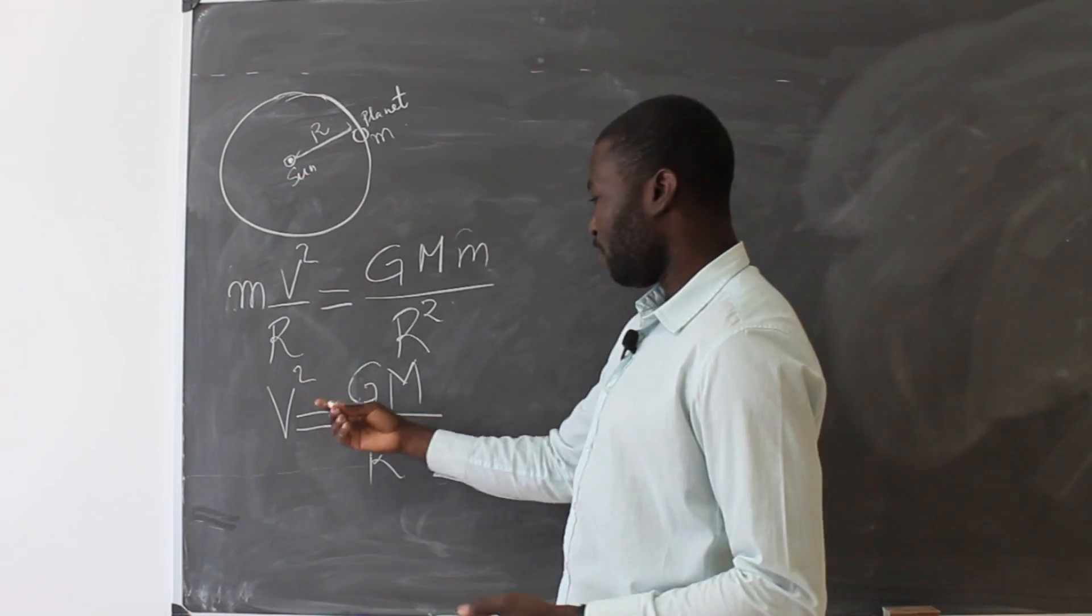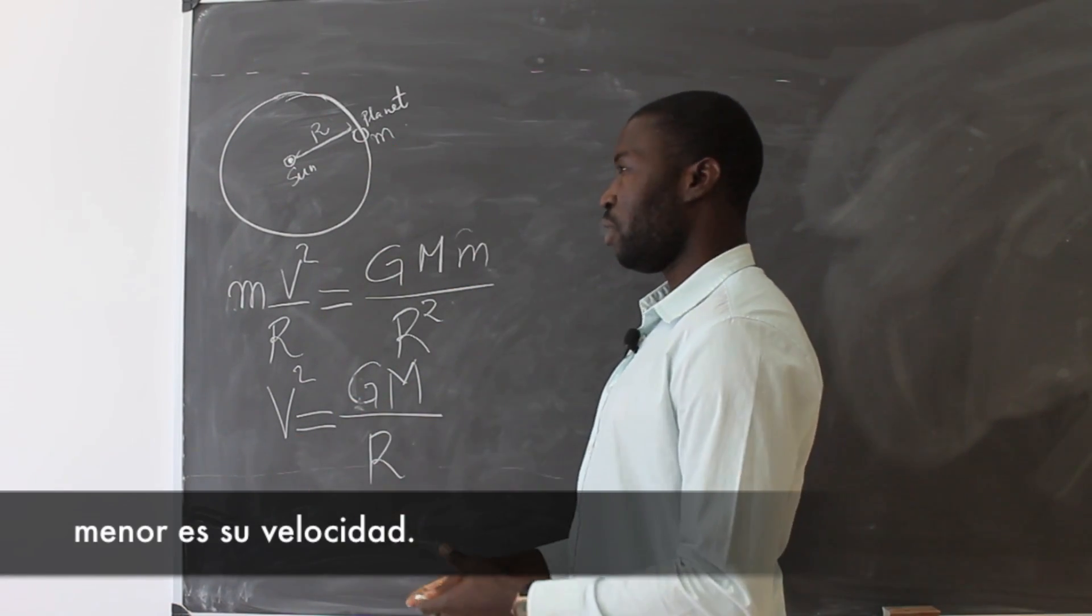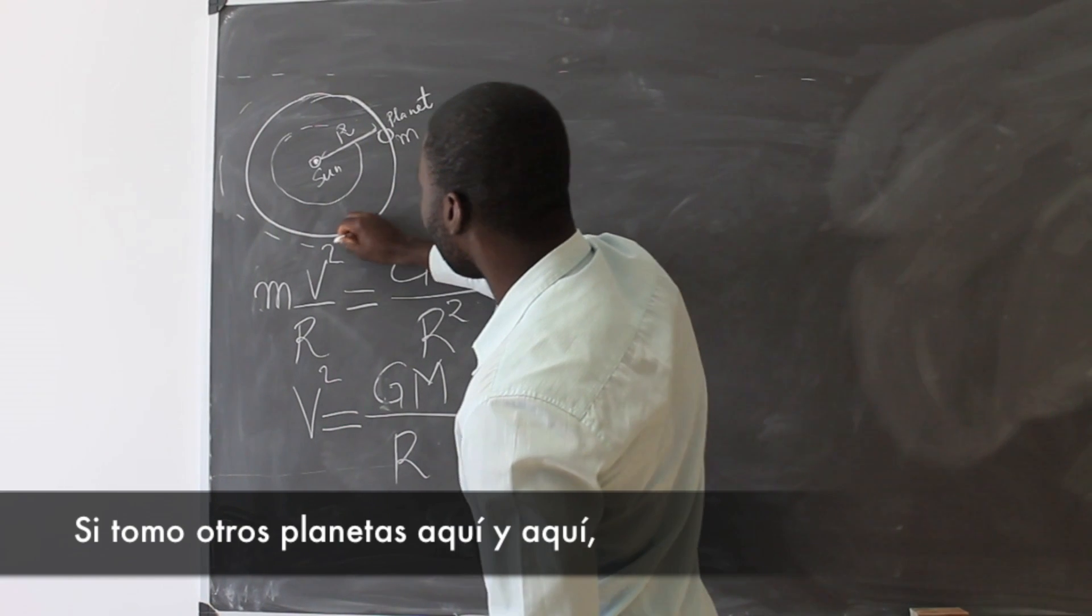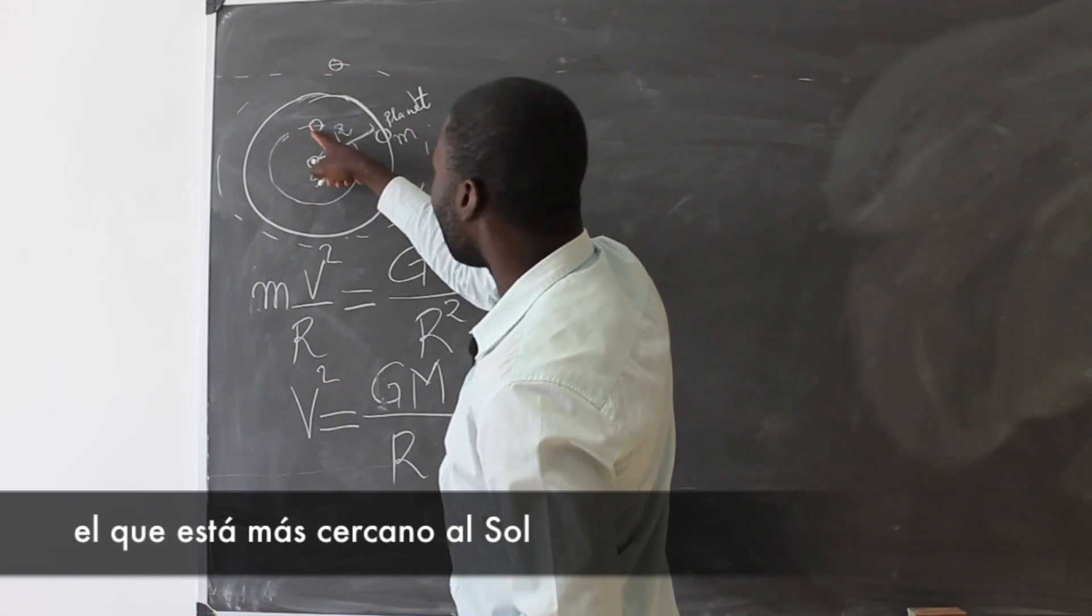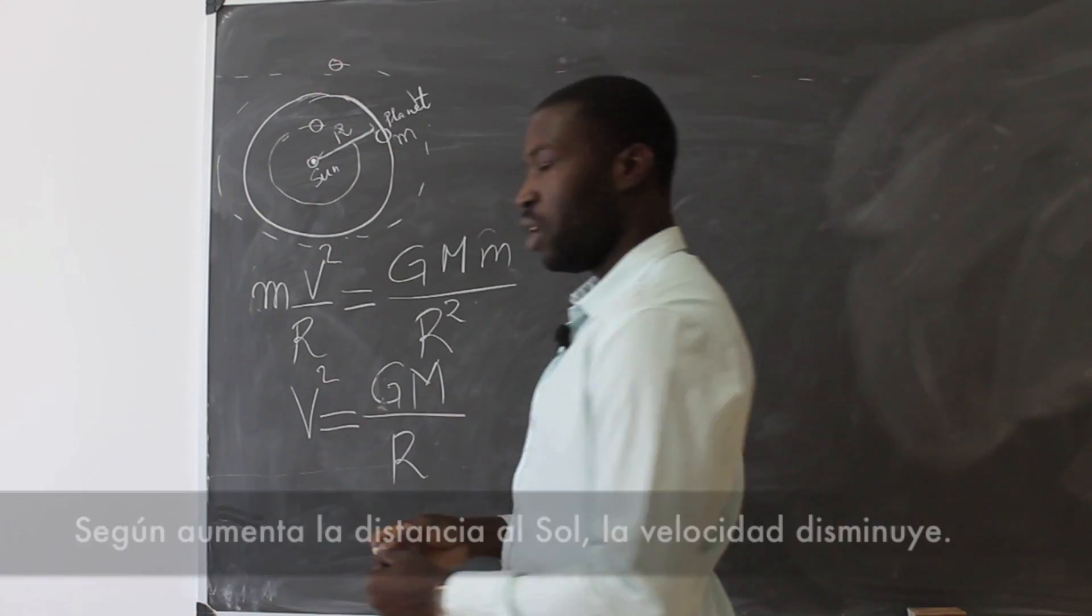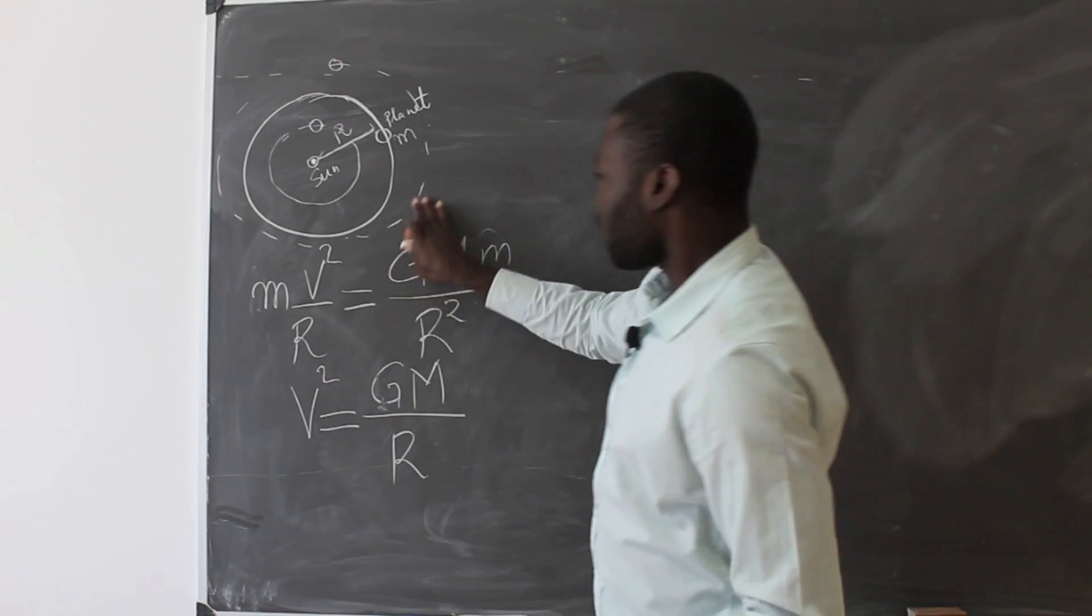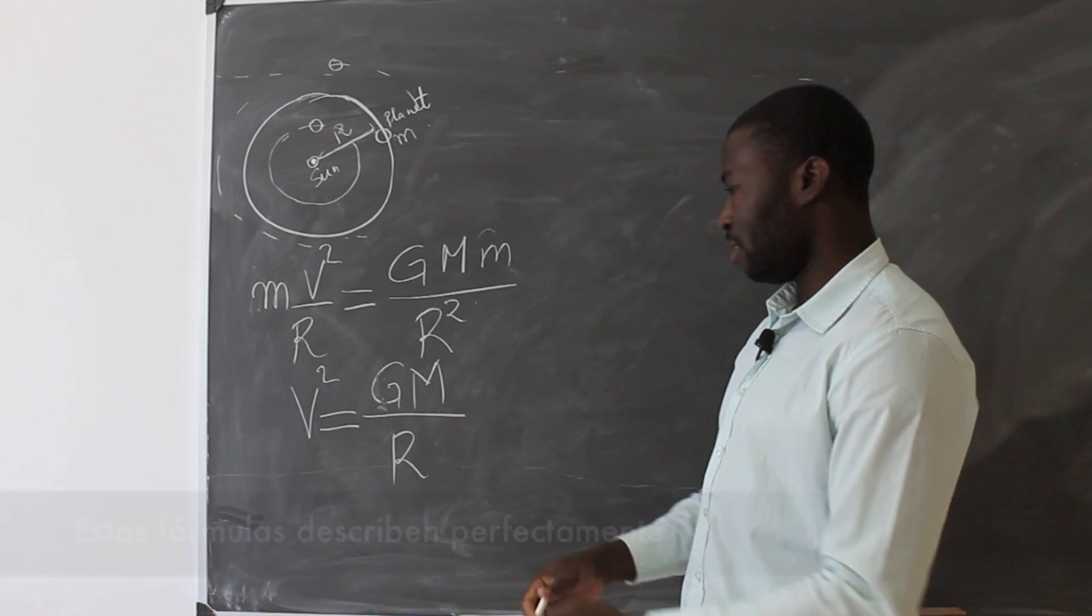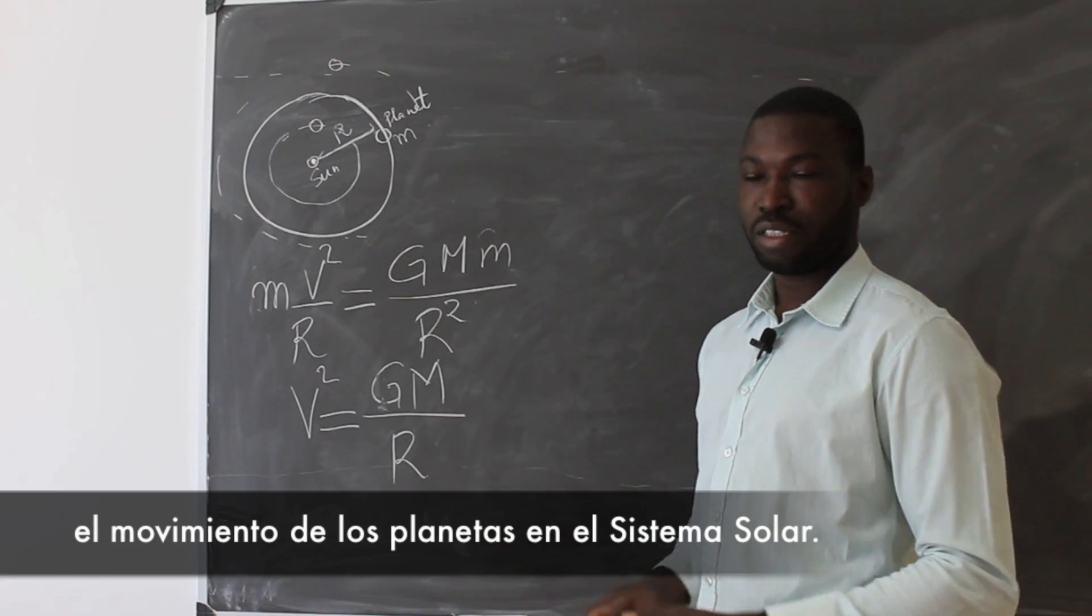This tells us that if the planet is far away from the Sun, its velocity should be smaller. It means that if I take another planet here, the one which is closer to the Sun will have larger orbital velocity compared to this one. So as the planet is far away from the Sun, its orbital velocity decreases. And this is precisely what has been observed in the solar system. In the sense that the Newtonian law of gravity is perfectly describing the motion of the planets in our solar system.